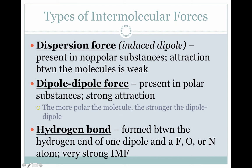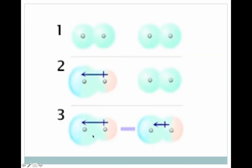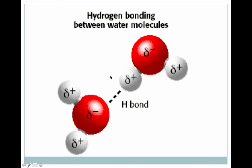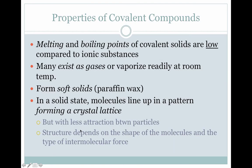To summarize the differences: dispersion force is between two nonpolar substances, while dipole-dipole and hydrogen bonds are both between two polar substances. The difference between dipole-dipole and hydrogen bond is that a hydrogen bond is a stronger dipole. Looking at the pictures, one shows a dispersion force and the other shows a hydrogen bond — notice it has a hydrogen and two oxygens, consistent with the FON rule.